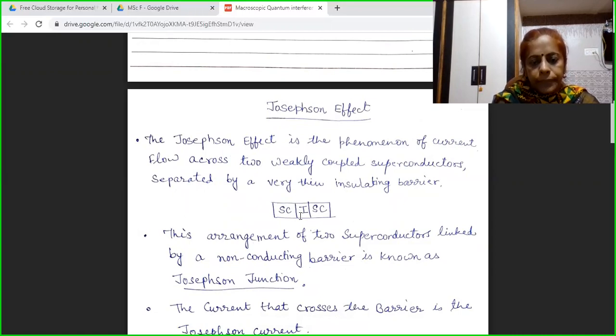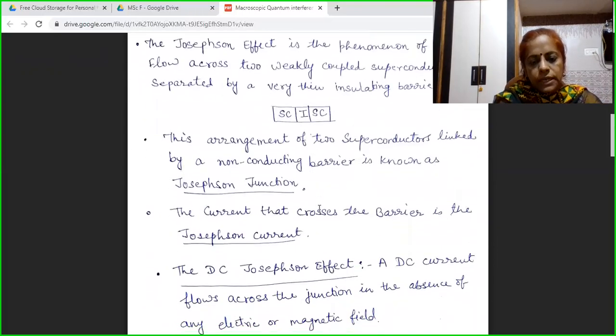This Josephson effect is the phenomena of current flow across two weakly coupled superconductors which are separated by a very thin insulating layer. This arrangement of two superconductors linked by a non-superconducting barrier is known as Josephson junction, and the current flowing across this barrier is the Josephson current.